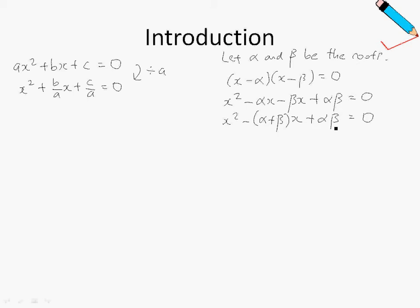And finally, let us compare the coefficients of equation number one and equation number two. Comparing coefficients, I realize that the coefficient of x is b over a. So therefore, comparing coefficients, b over a is equals to negative alpha plus beta.